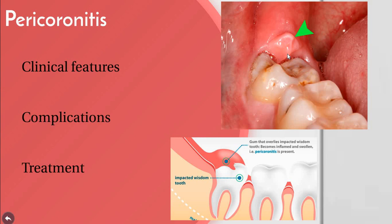Continuous irritation and local contributing factors such as plaque in this area make it more prone to infection, swelling, redness, and pain. The clinical picture shows a markedly red, swollen, tender suppurating lesion with radiating pain to the ear, floor of the mouth, and throat. There is foul taste and inability to close the jaw. Swelling of the cheek at the angle of the jaw and lymphadenopathy are also clinical features. Toxic symptoms like fever, malaise, and leukocytosis may also exist.